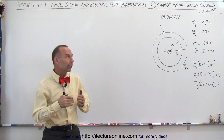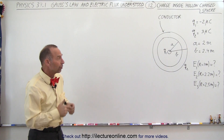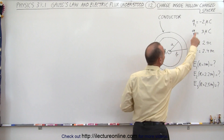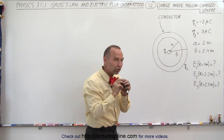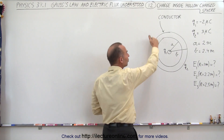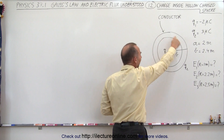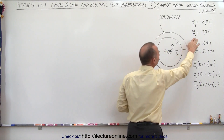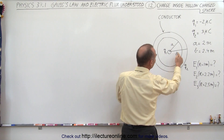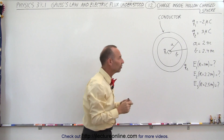Welcome to ElectronLine. Here we have an example where Gauss's law is very handy to use. We have a small charged object with charge Q1 equal to minus 2 microcoulombs, placed within a hollow spherical conductor that has an outside and inside surface, with air in between where Q1 resides. We then put on that conductor a charge Q2 equal to 3 microcoulombs. The inside radius of the large sphere is 2 meters, the outside radius is 2.4 meters, so the thickness of that conductor is 0.4 meters.